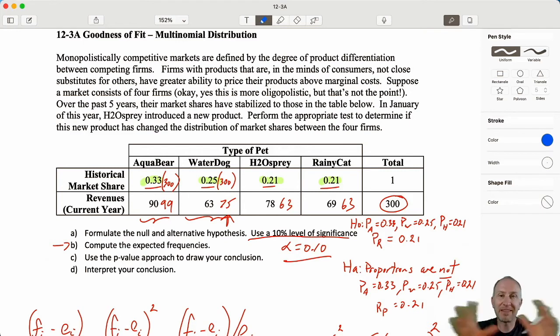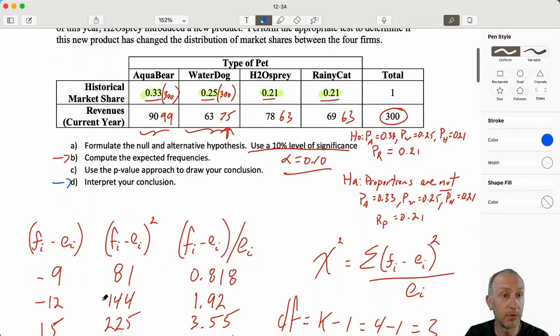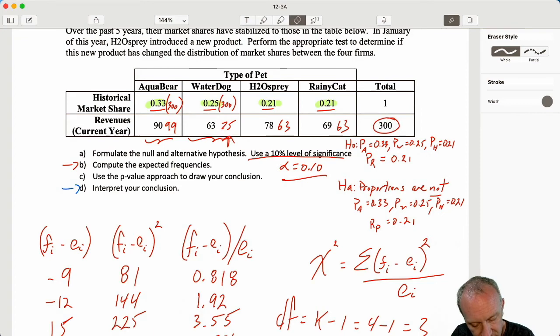Now that's all that we need for this problem. We've gone through everything. Our interpretation here is, of course, that the introduction of this new product has changed. It has influenced the distribution of market shares between these four firms. Now similarly to what we did with the previous exercises when we were looking at those tests for independence. Something else that we can do now is to do a graphical representation of the data to give us some idea of how that distribution has changed. So what I'm going to do here is I'm going to do a bar chart.